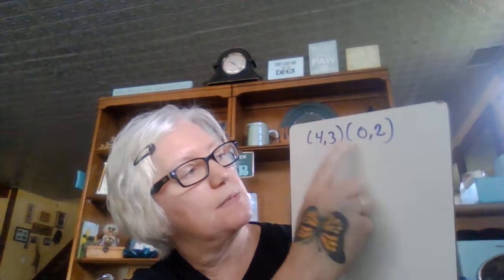I'm going to go ahead and find my slope, my y minus y over x minus x. So, 3 minus 2 over 4 minus 0. 3 minus 2 is 1. 4 minus 0 is 4. So, I have y equals 1/4x plus b.